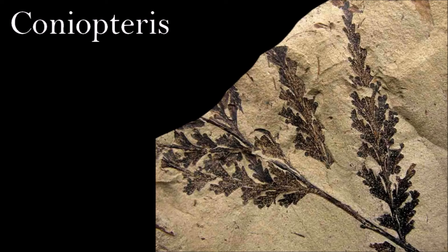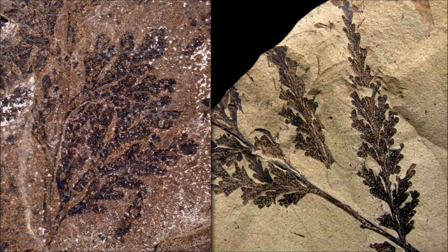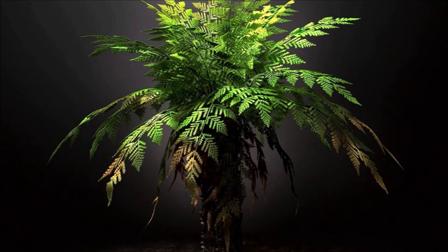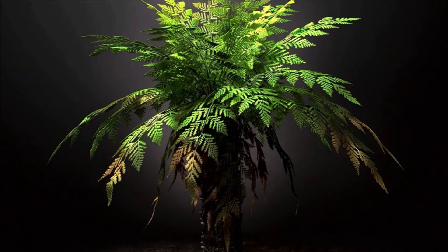Coniopteris is one of the most diverse and widespread genera of Jurassic ferns. Some fronds were vegetative, with leaflets that had broad lobes to collect light for photosynthesis. Other fronds, with more slender leaflets, were fertile, with small clusters of spore-producing sacs at the end of the leaflets. The detailed structure of the sporangia shows that these fossil ferns were related to the modern-day tree fern Dicksonia. At least some of the Mesozoic Coniopteris fronds also came from tree ferns, although others may have grown on plants that were much smaller.